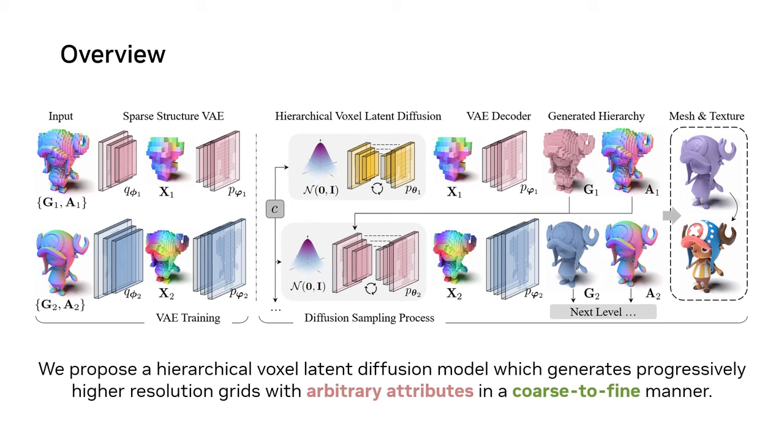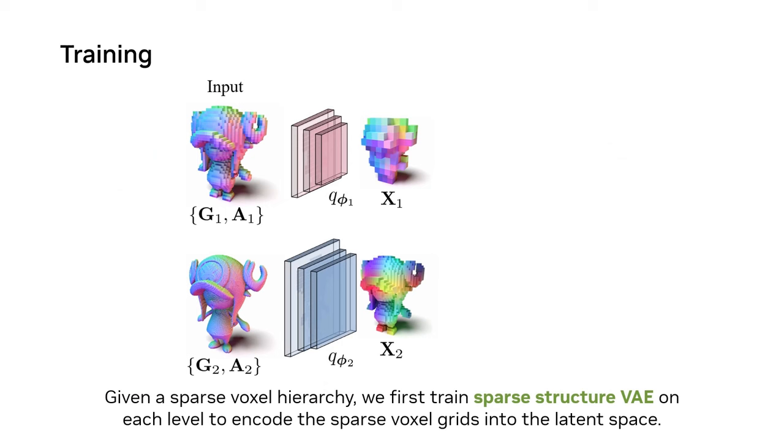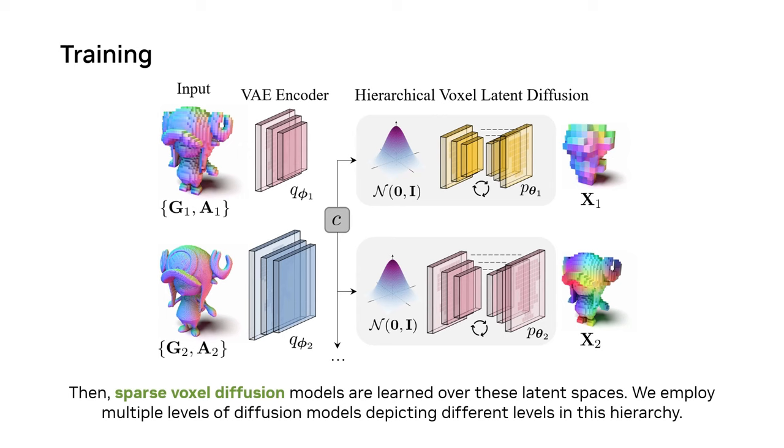So how does XCube work? Our model is a hierarchical latent diffusion model over sparse voxels. We first encode a dataset of sparse voxel grids into a latent space using a sparse structure VAE. We then train a sparse voxel diffusion model over the latent space of this VAE.